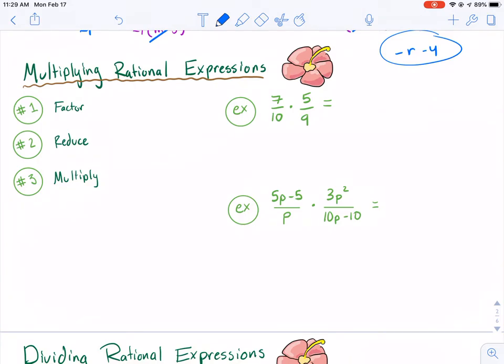So there's a three-step process for multiplying rational expressions. The first is factor. So if you can factor, it's essentially reducing and getting it to look a little bit easier for you.